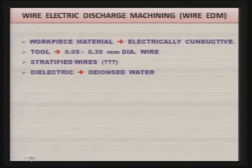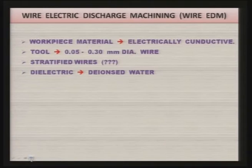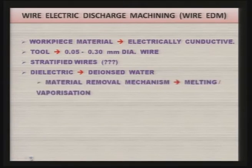In wire EDM, the dielectric used is mostly deionized water, while in case of the EDM process it is kerosene, paraffin oil, or a dielectric developed by individual manufacturers whose composition is normally kept secret. But in wire EDM, deionized water is invariably used as the dielectric.